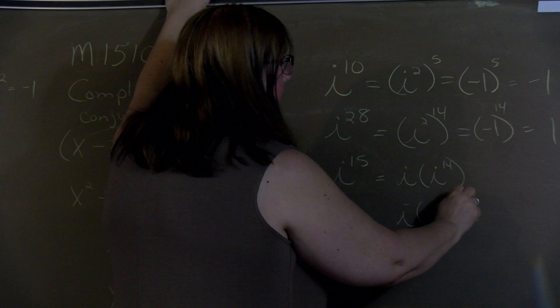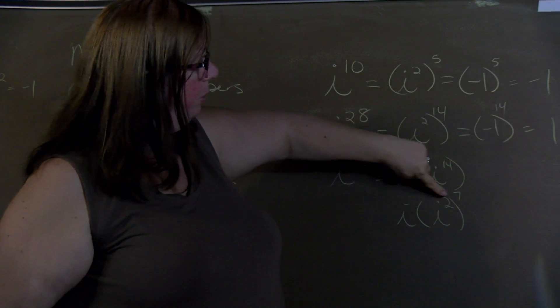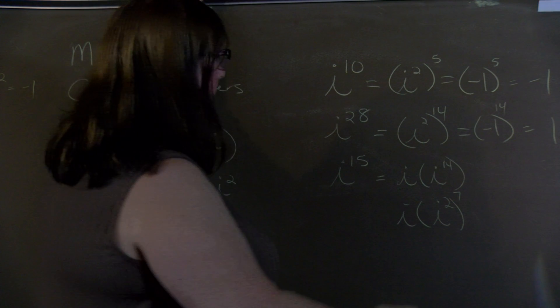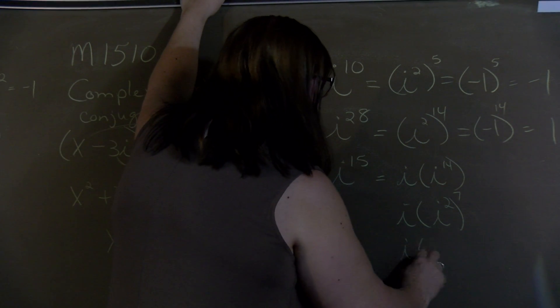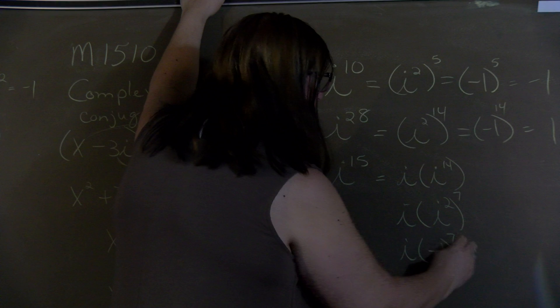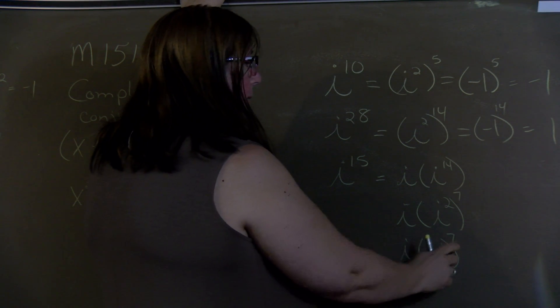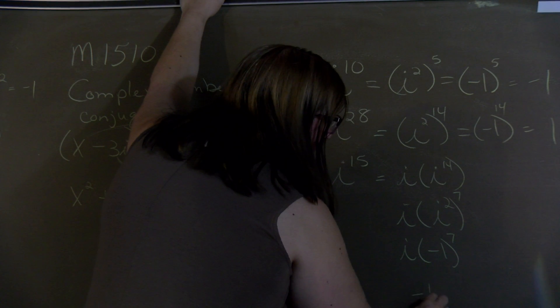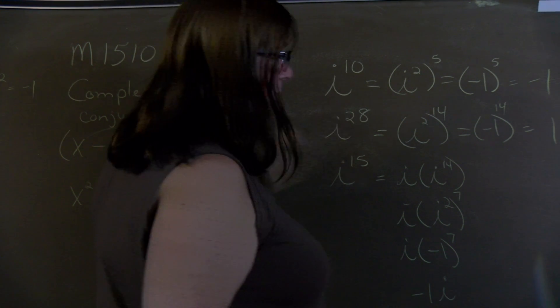i squared to the 7th. So the 14, 2 times 7 is 14. So when we plug in our i squared is a negative 1. Negative 1 to the 7th is going to be a negative. So it'll be a negative 1 i or negative i.